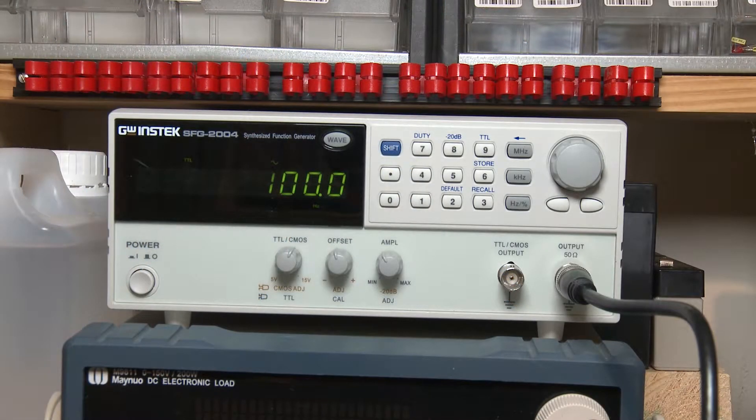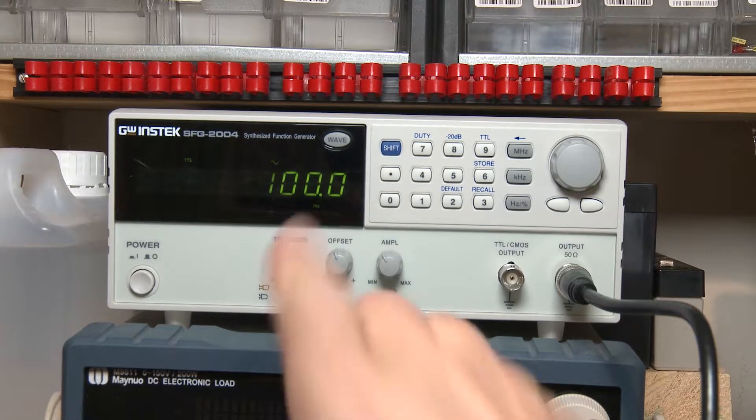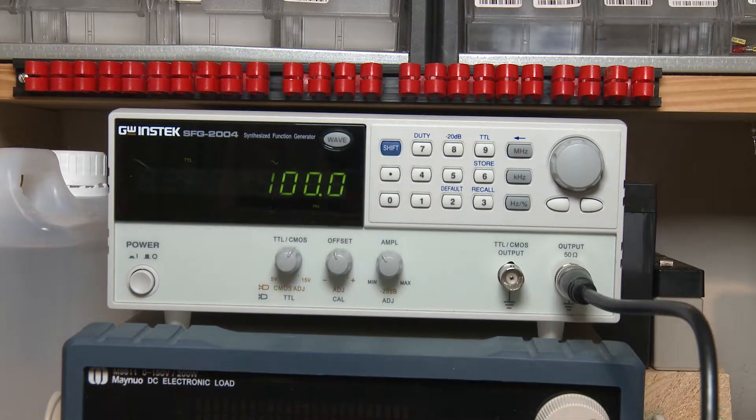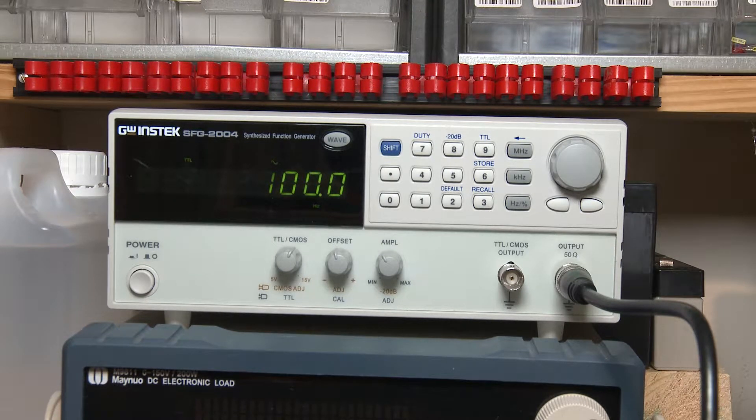What I'm going to use to test this is a function generator. I've got it set to 100 hertz which is quite on the higher end of the frequency to drive it. Usually somewhere between 20-30 hertz to 60, 80, 100 hertz. If it's too low it's going to flicker, if it's too high I believe it will draw too much current.